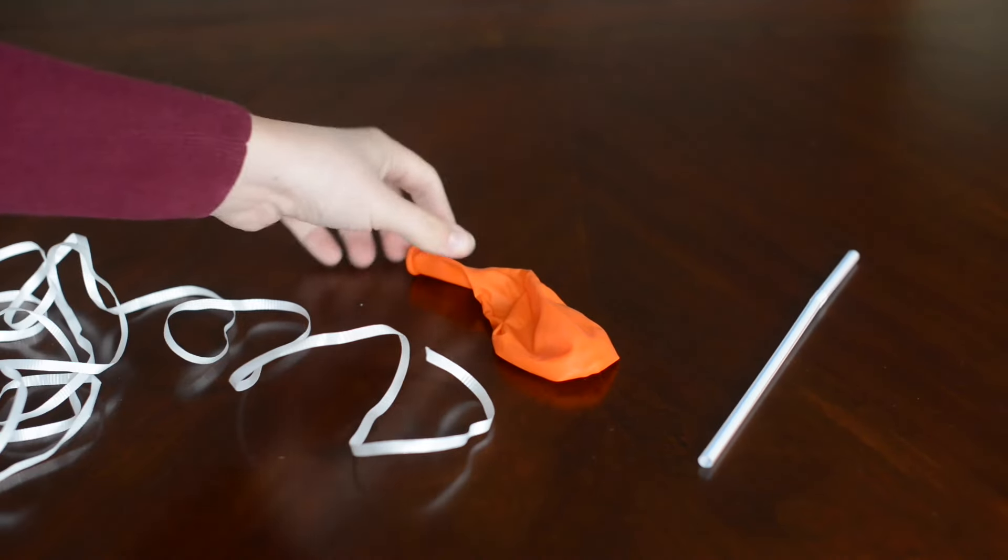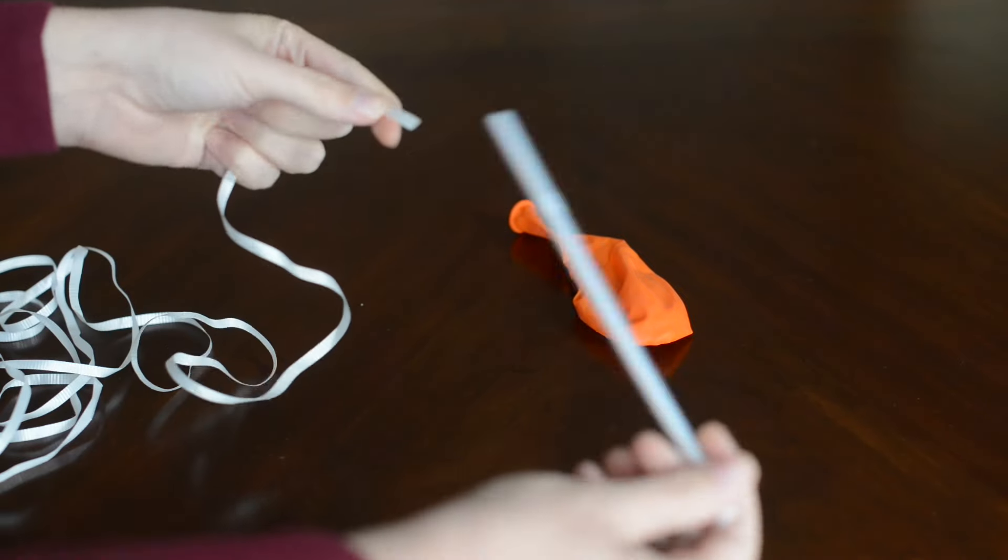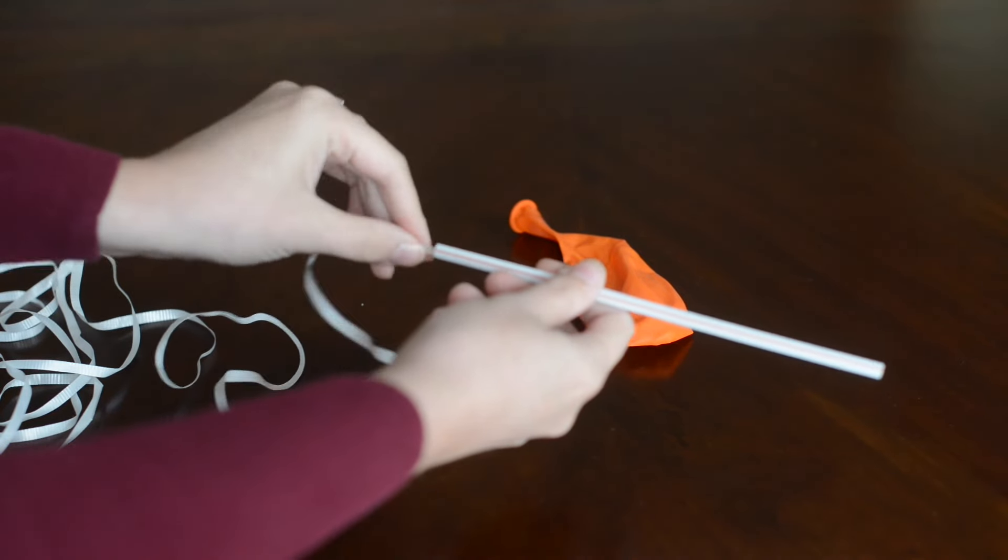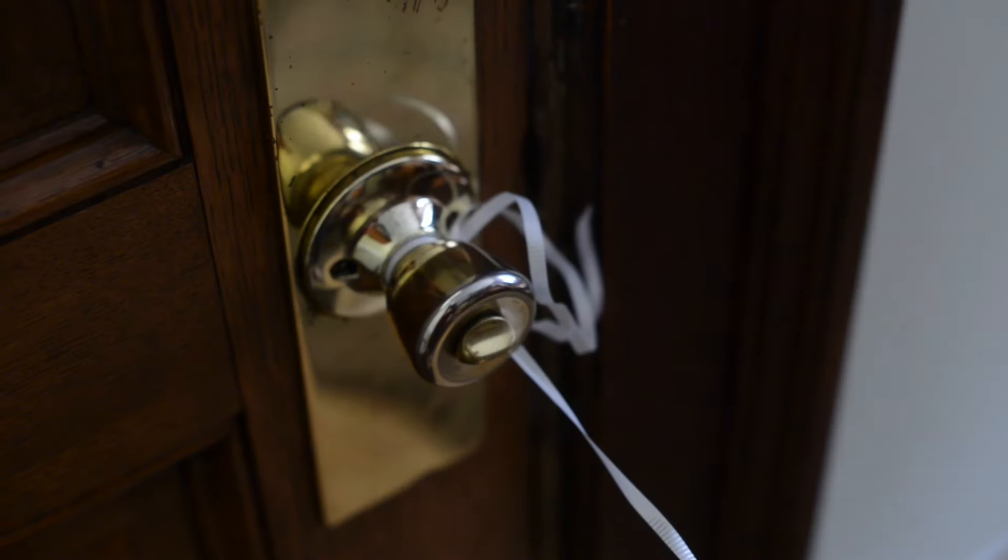To make balloon racers you need a straw, a balloon, and some ribbon. We use Christmas ribbon and then you just feed your ribbon through the straw, blow up your balloon, and tape your balloon to the straw, and then tie off your string.